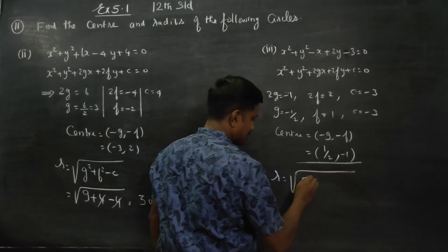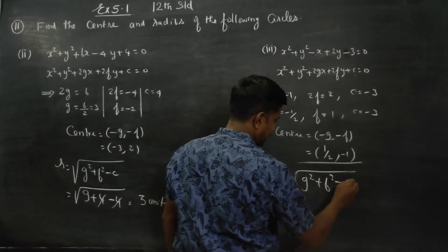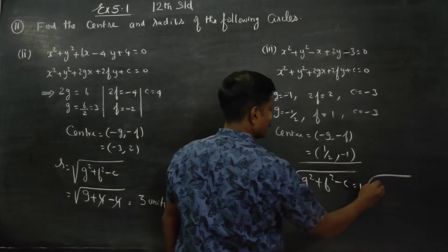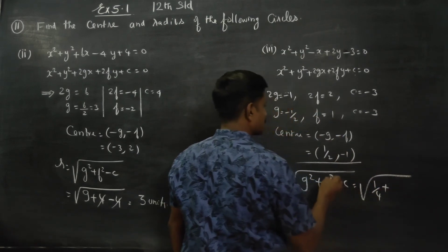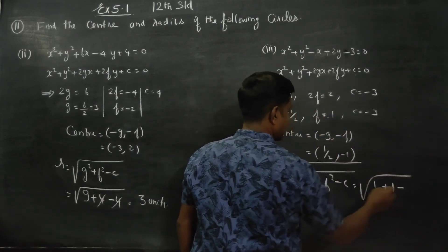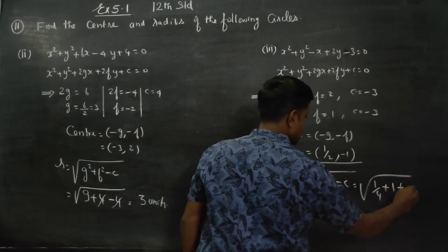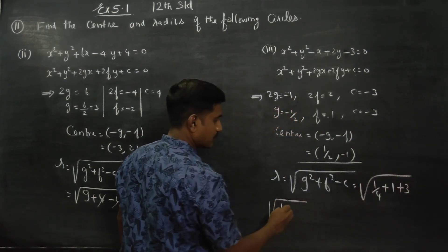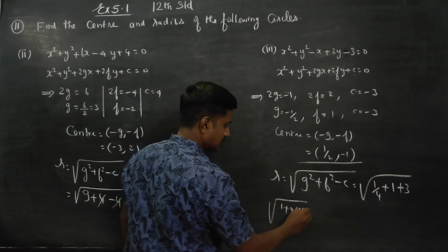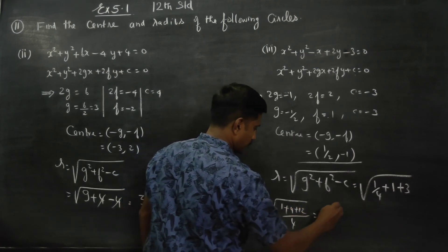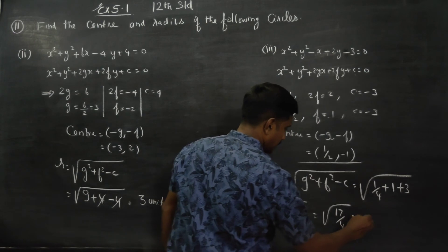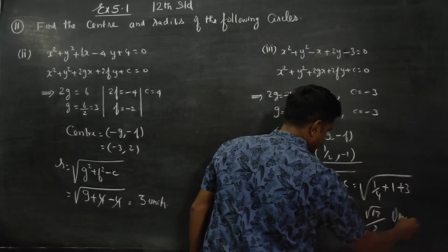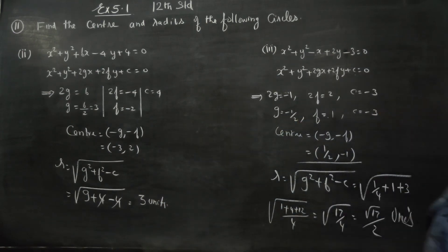The radius is equal to the square root of g² + f² − c. So square root of (1/2)² + 1² minus (−3), which is square root of 1/4 plus 1 plus 3, giving square root of (1 + 4 + 12) by 4, which is root 17 by 4. Therefore the radius is √17 / 2 units.